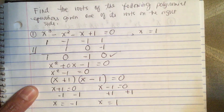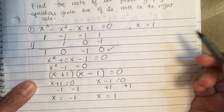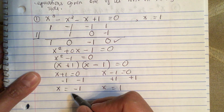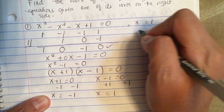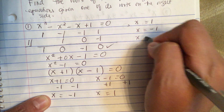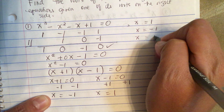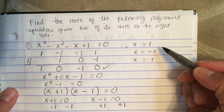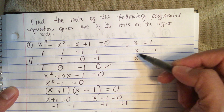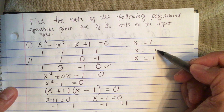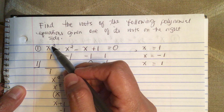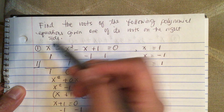So the three roots are x equals 1, x equals minus 1, and x equals 1 again — so x equals 1 has a multiplicity of 2, and x equals minus 1. There are three roots because this is a third degree polynomial.